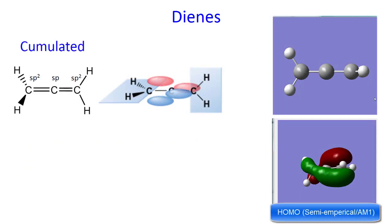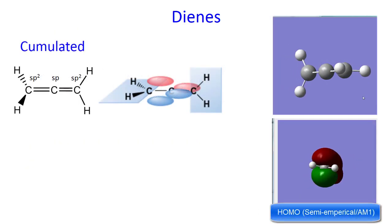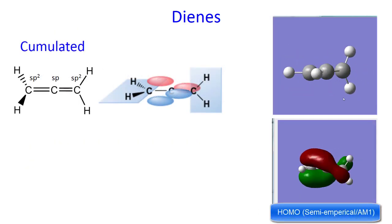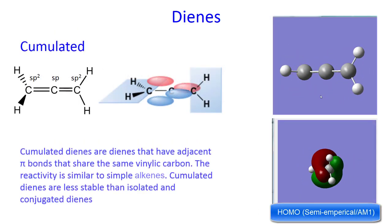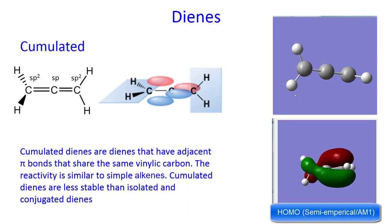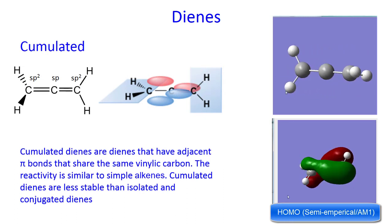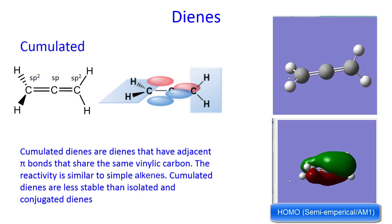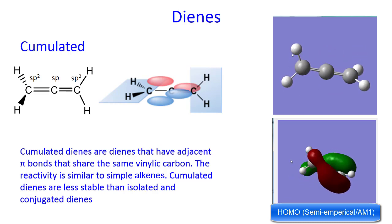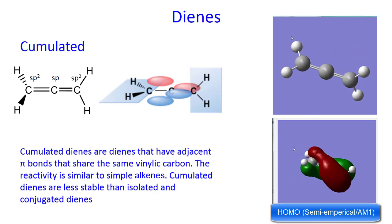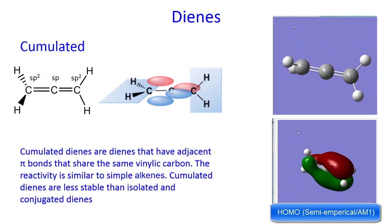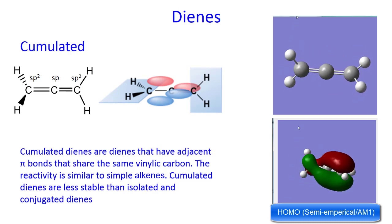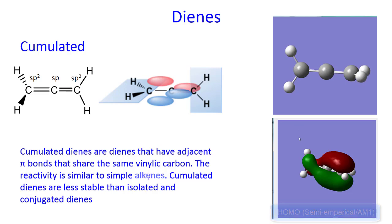Cumulated dienes are dienes that have adjacent pi bonds that share the same vinylic carbon. The reactivity is very similar to simple alkenes. Cumulated dienes are less stable than isolated and conjugated dienes.